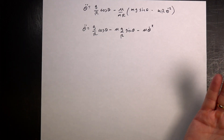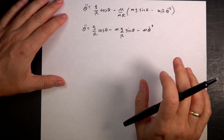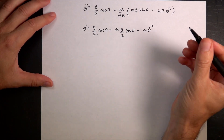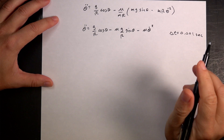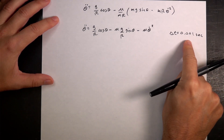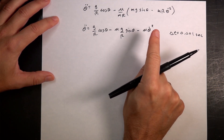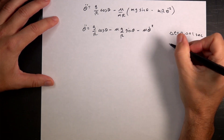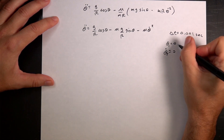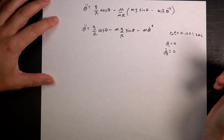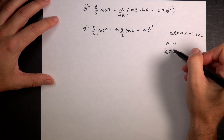Let's say that I break this into time steps of delta t equals 0.001 seconds. During that short time interval, I can assume theta-double-dot is constant. It's not constant because it changes with theta and with theta-dot, but let's assume that it is. And let's assume that I start off with theta_1 equals 0 and theta-dot_1 equals 0. I know the initial conditions. Can I find theta_2 at the end of the time interval and theta-dot_2 at the end of the time interval? Yes, I can.